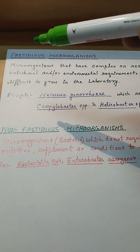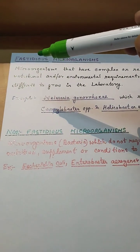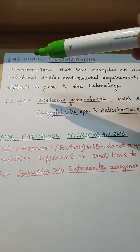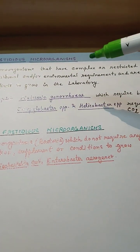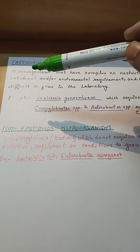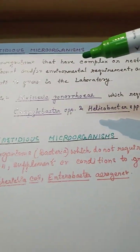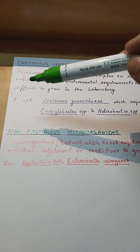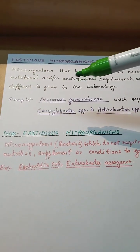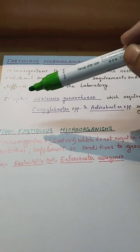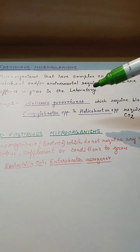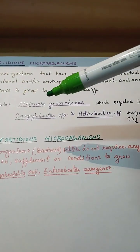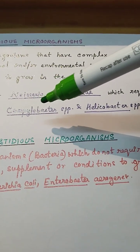In this short video, I will discuss fastidious and non-fastidious microorganisms. Microorganisms that have complex or restricted nutritional or environmental requirements are difficult to grow in the laboratory. Examples include Neisseria gonorrhoeae, which requires blood or hemoglobin, and Campylobacter species.